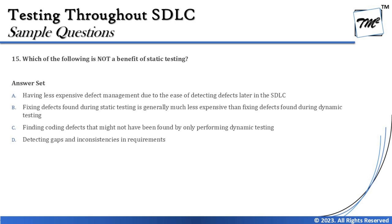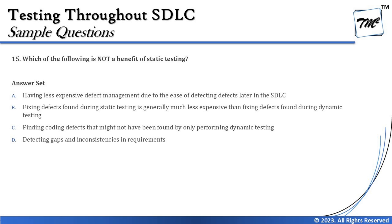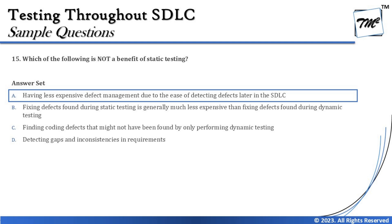Option D says: detecting gaps and inconsistencies in requirements — which is a direct benefit of static testing, achieved by conducting reviews on requirements. So all benefits are well listed, and the answer that is NOT a benefit is option A: having less expensive defect management due to ease of detecting defects later in the SDLC. Every single word can contribute to the correct response, and that is where people generally go wrong.